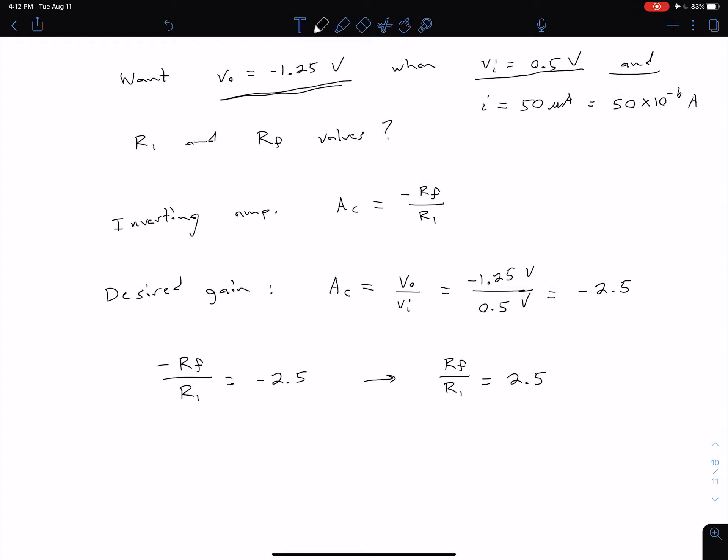So if we did not have this extra information about our current restriction, what we would do at this point is we could just choose one of these resistor values and then choose the other based on this restriction for our gain.